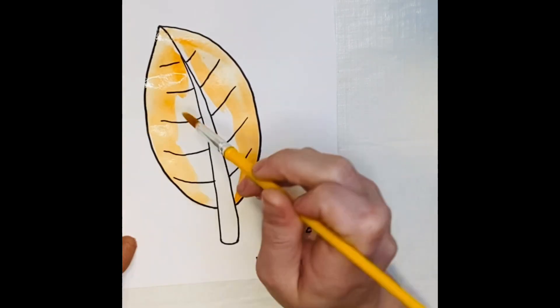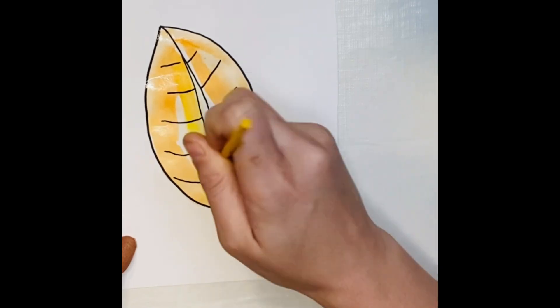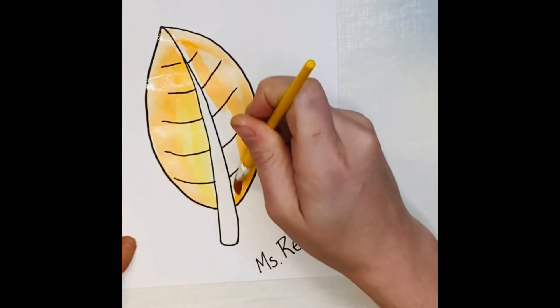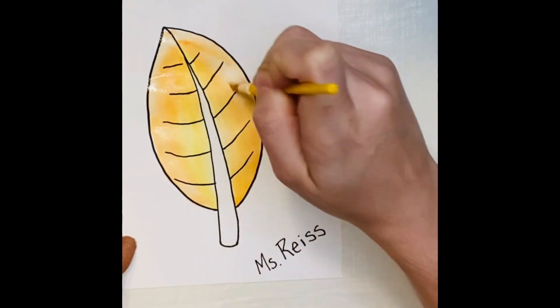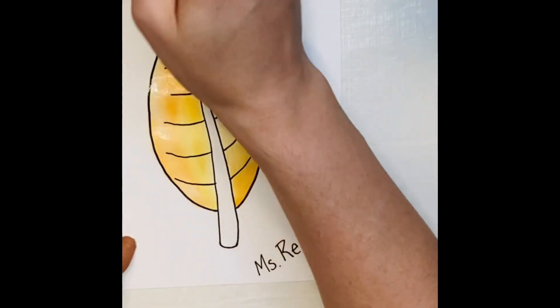I'm then going to start with the border or the outline of my leaf and work my way in. If I want to add a second color, I'm first going to wash off the paint in the water off of my paintbrush on the sponge and then add in my second color. I only need a little bit of color and a lot of water.